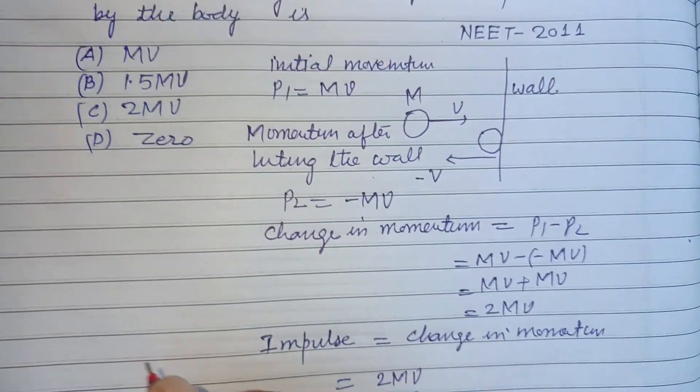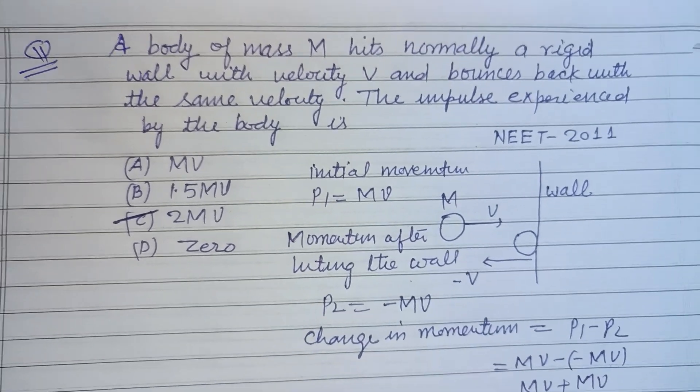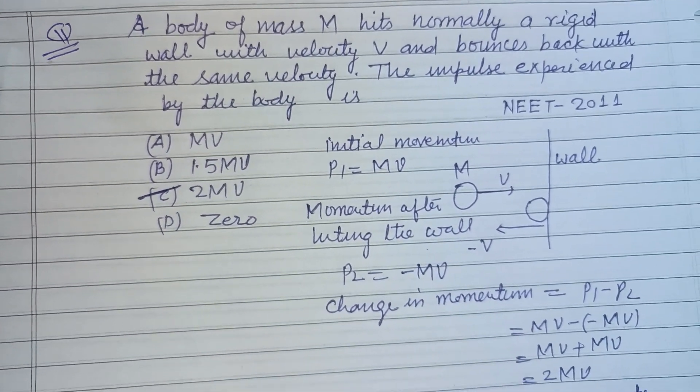2MV is the correct answer of this question which is found in option C. Option C is correct. I hope you got it. Please like the video, subscribe to the channel, thanks for watching.